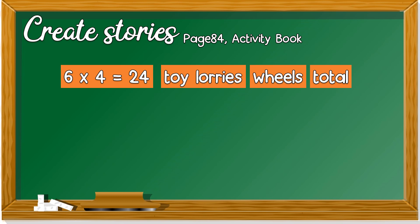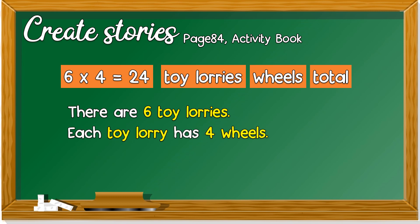Using all these keywords, you need to create a story. You can write it like this: There are six toy lorries. Each toy lorry has four wheels. Every lorry has four wheels. The total of the wheels are 24. So, it's 6 × 4 = 24.